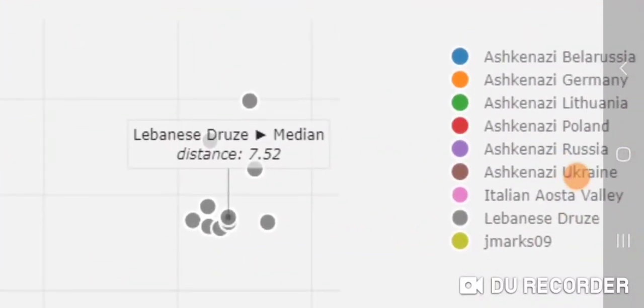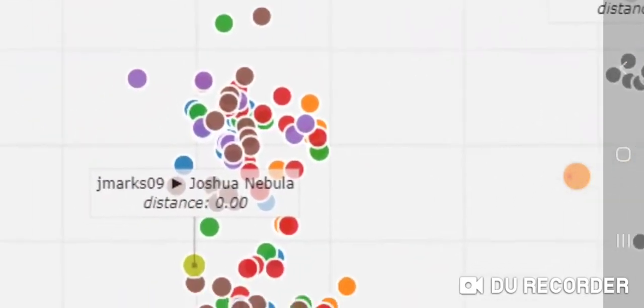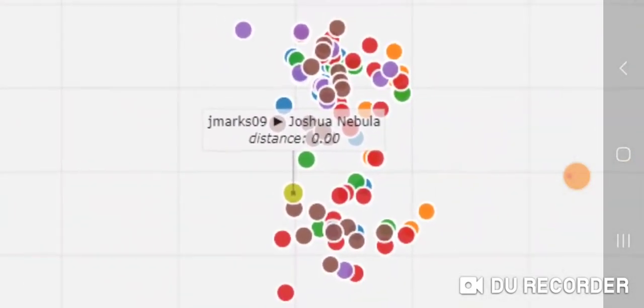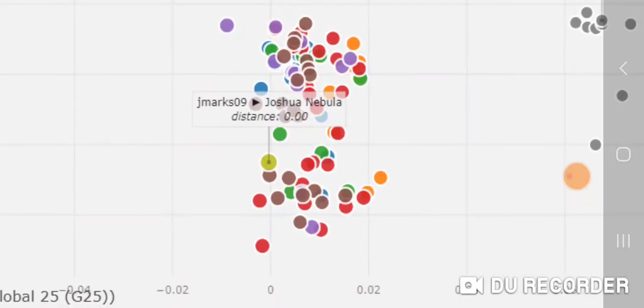There's the legend so you can see the colors up close and match them. You get Ashkenazi Belarus, Germany, Lithuania, Poland, Russia, Ukraine, then Italian West Valley, Lebanese Druze, and my Nebula kit.